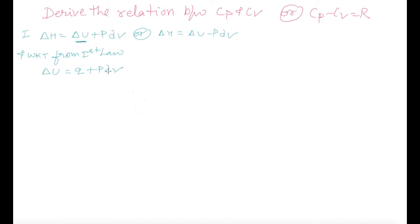Delta U is equal to Q plus PdV. If I will put this value, equation 2 value in equation 1, the value of delta U, then delta H is equal to Q plus PdV and minus PdV.